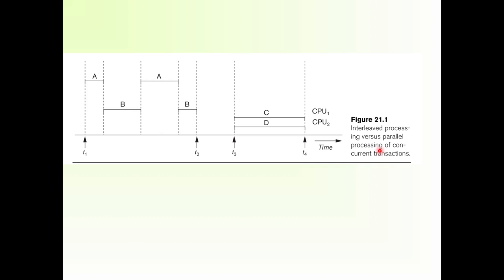In parallel processing, if C and D both send requests at the same time, C's transaction takes place on one CPU and D's transaction takes place on another CPU simultaneously, because multiple CPUs are used. Both execute at the same time. This is parallel processing — both sending requests for accessing information simultaneously, whether for read or write purposes.